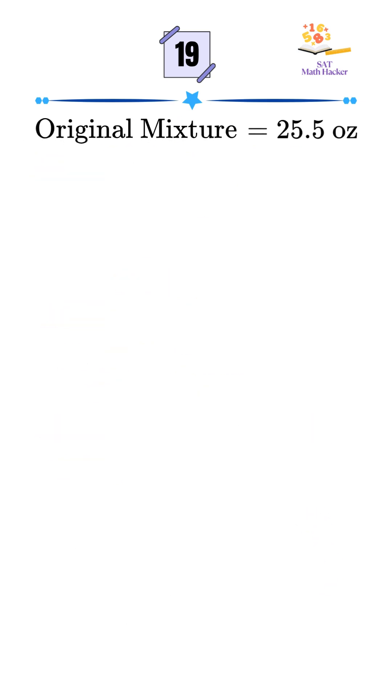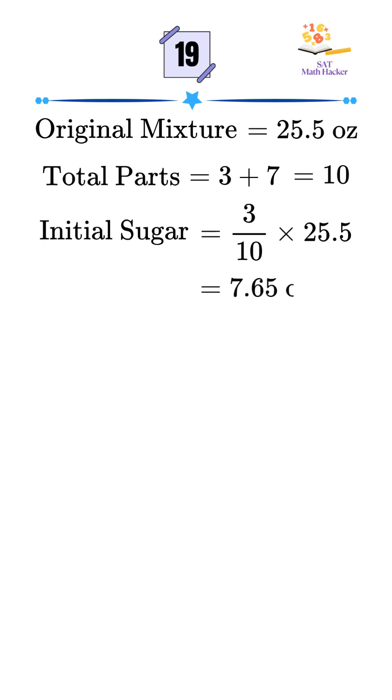The original mixture is 25.5 ounces, and the total number of parts equals 10. That means the sugar makes up 3 tenths of 25.5, which is 7.65 ounces. The flour is 7 tenths of 25.5, giving us 17.85 ounces.